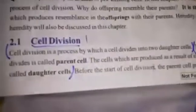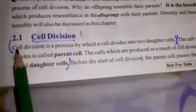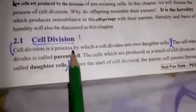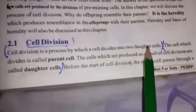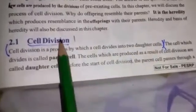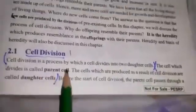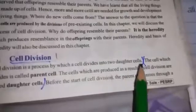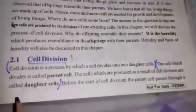These definitions are available in your book on this page. As you can see, mark this: cell division is a process by which a cell divides into two daughter cells. Next, the cell which divides is called parent cell — اس کو بھی مارک کر لے — and the cells which are produced as a result of cell division are called daughter cells. So we have three definitions here on the first page of chapter number two.